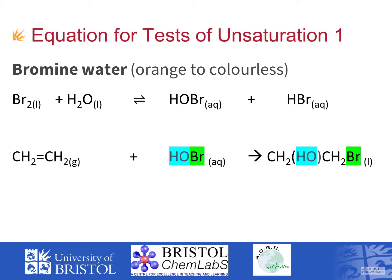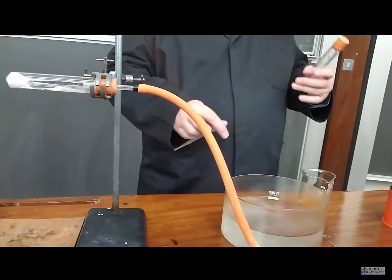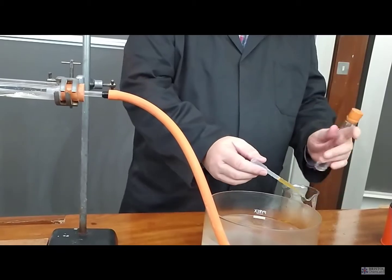Bromine water, as you can see, is an orange coloured solution. It's not the same as bromine. To make bromine water, your technical staff will have put a few drops of bromine into contact with water and let it diffuse.